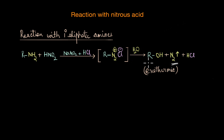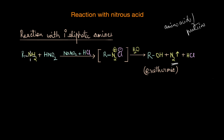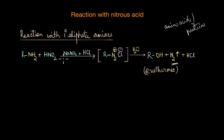Because of this observable feature, we can use this reaction to quantitatively estimate the presence of amino acids and proteins in a given sample. For every mole of a primary amine, one mole of nitrogen gas is released. By measuring the volume of nitrogen gas released, we can quantitatively determine how much primary amine is present in a given sample.